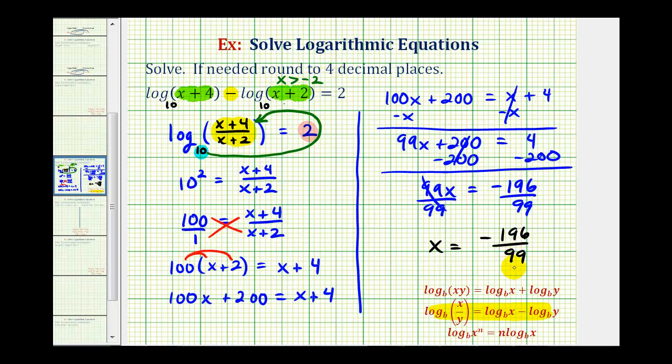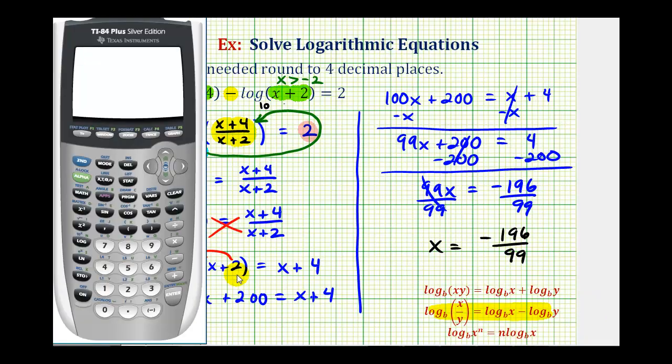So if this value is not greater than negative two, there's no solution to this log equation. Well, we should recognize that this fraction is larger than negative two, but just to be sure, we can convert it to a decimal. Negative 196 divided by 99, and notice how this decimal would be to the right of negative two on the number line, and therefore it is greater than negative two, and our solution.